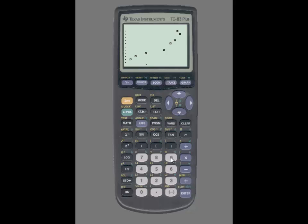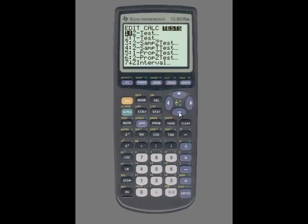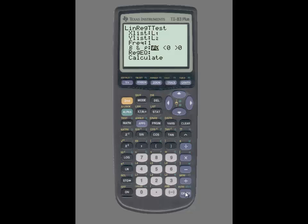To compute r and determine the regression line, we're going to press stat, use the right arrow key to highlight tests, and scroll down until you see linear regression t-test. Press enter, and here once again you're going to enter your X list and your Y list. I don't have to make any changes because I entered my data into L1 and L2.